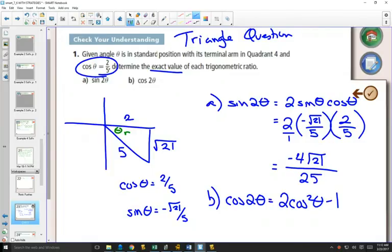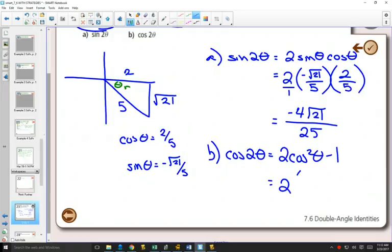So now when calculating this, it's going to equal 2. Cos of theta is 2 fifths. What am I going to do with that squared? Well, squared just means multiplied by itself. So I could write 2 fifths times 2 fifths, or I could write 2 fifths squared minus 1.